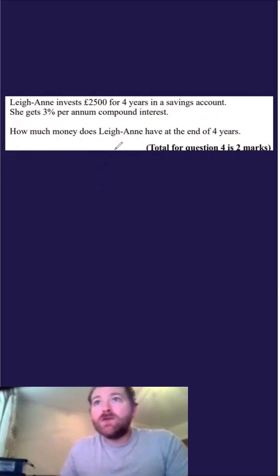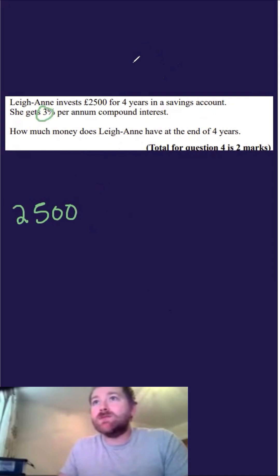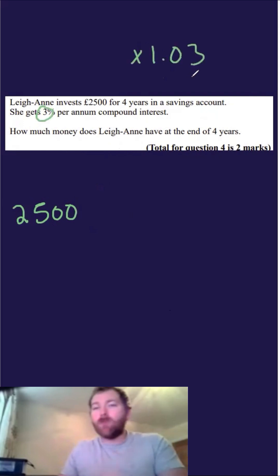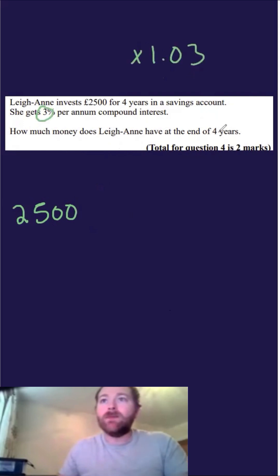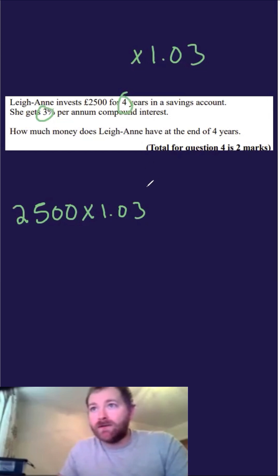So first of all, we're going to take the amount that we've got — that's the capital amount, which is £2,500 — and then we're going to increase this by 3%. The percentage multiplier for 3% is times by 1.03. And we're increasing by four years, so we're going to do this to the power of four.